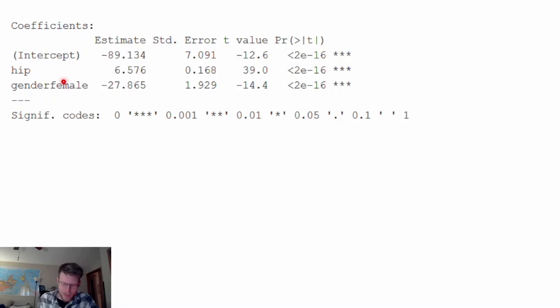R will naturally assign one category to one and it will show up here in the output, and then the other category is going to be zero. Oftentimes I believe the default in R is that the alphabetically first category gets assigned to zero, the alphabetically second gets assigned to one. For whatever reason, I don't even know why, when I did this female got assigned to one somehow. So we're just going to run with it.